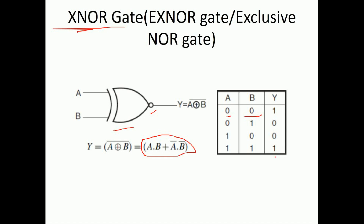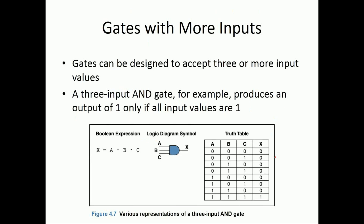Let us take one more example with multiple inputs. We have discussed all cases with the minimum number of inputs, but the maximum number of inputs can be N — except for the NOT gate. For example, a 3-input AND gate: the number of combinations is 2 raised to power of 3, which equals 8. The truth table has 4 zeros then 4 ones for the first input, 2 zeros then 2 ones alternating for the second, and 0,1 repeating for the third. As per the AND gate definition, when all inputs are high, output is high; in all remaining cases, output is 0.